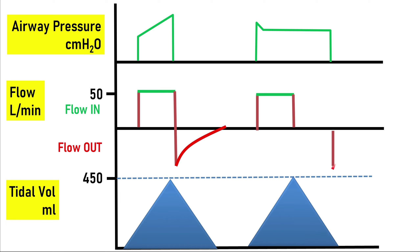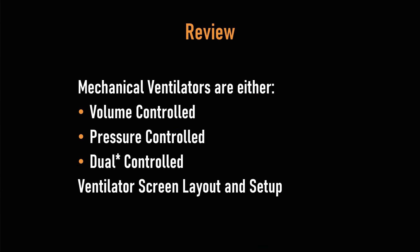The typical waveforms on volume control ventilation: on top is airway pressure — usually positive, measured in centimetres of water. In the middle is flow — positive during inspiration and negative during expiration. On the bottom is tidal volume in mils. Even though the flow and pressure waveforms look different, the tidal volumes are the same, which is characteristic of volume control ventilation. So what I've covered is mechanical ventilators and their control: volume controlled, pressure controlled, or dual controlled (volume guaranteed pressure control), plus the ventilator screen layout and typical waveforms.